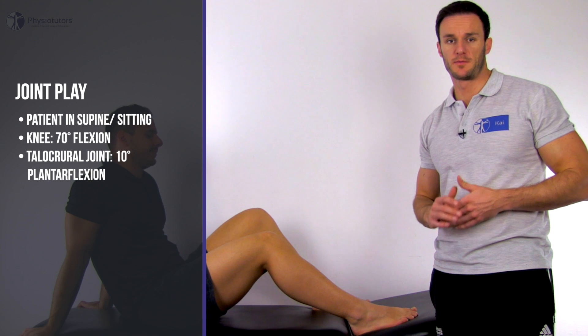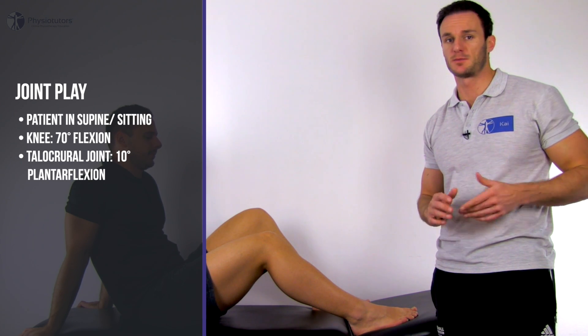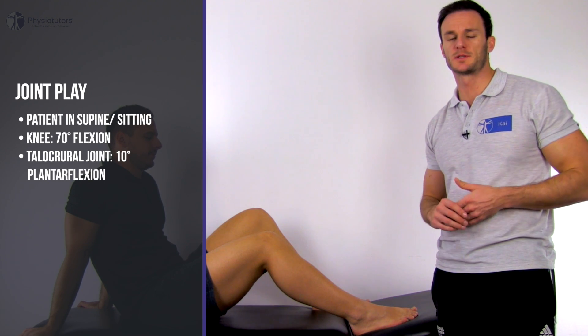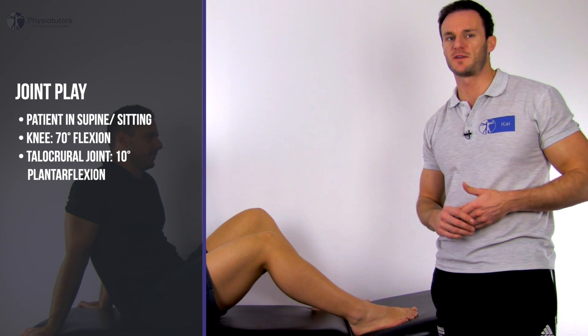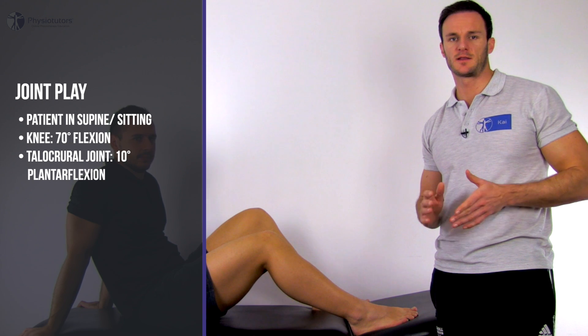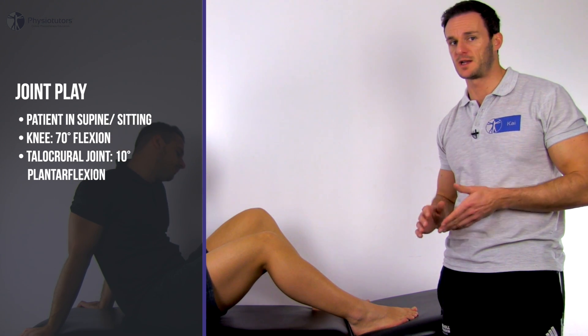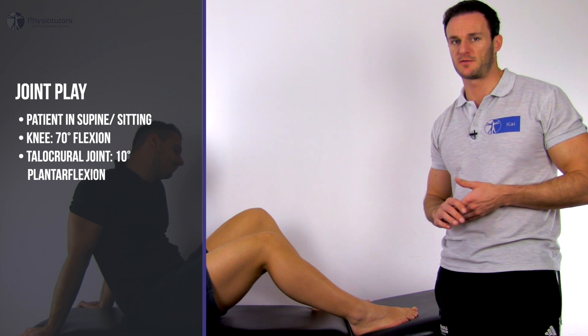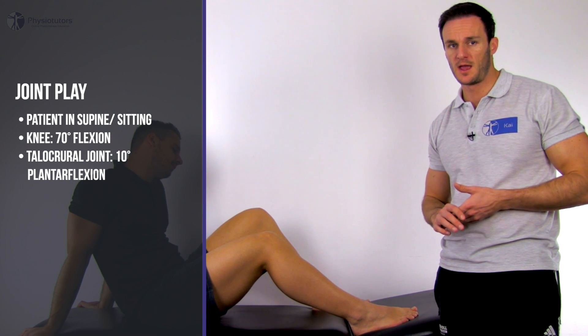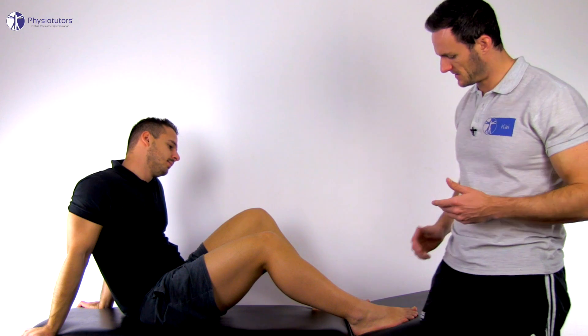To assess joint play of the tibio-fibular joint, have your patient in supine or sitting position with the knee flexed to 70 degrees. The talocrural joint is brought into 10 degrees of plantar flexion and is fixated by the examiner.